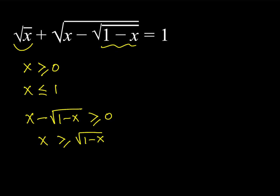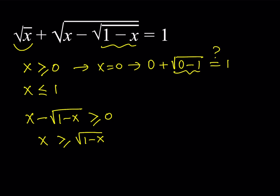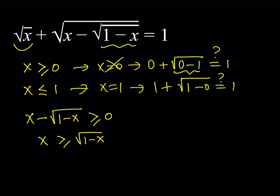Now, one of the things we're going to talk about is: can x equal 0 or 1? We can easily check. If we replace x with 0, we get 0 plus the square root of 0 minus 1, because 1 minus 0 equals 1, and the square root is 1. But square root of negative 1 is not a real number, so x equals 0 is not a solution. Let's check x equals 1: we get 1 plus the square root of 1 minus 0, and 1 does not equal 2, so x equals 1 is not a solution either.